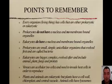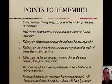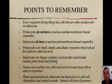Prokaryotes are small, simple, unicellular organisms that evolved first and are also called bacteria. Eukaryotes are bigger, more complex — their organelles are more compartmentalized and organized. They evolved after and include animals, plants, fungi, and protists.